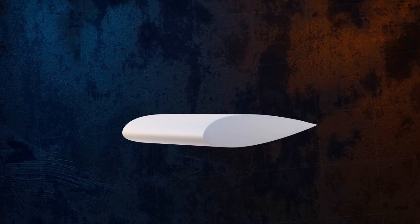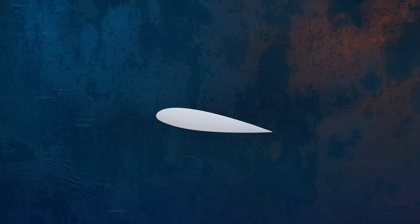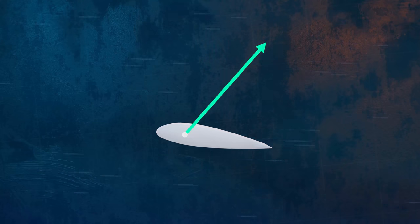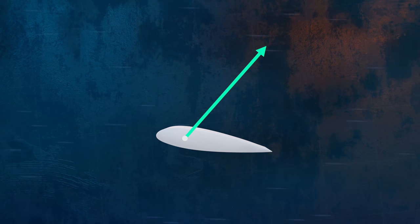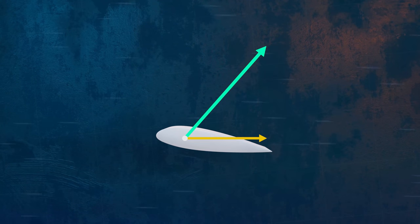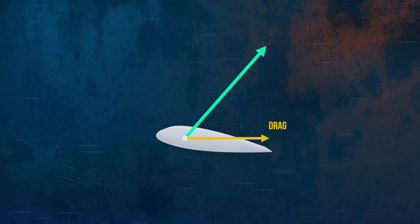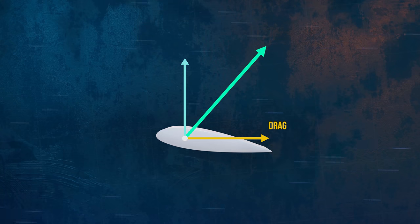When fluid flows past an object, or an object moves through a stationary fluid, the fluid exerts a force on the object. We can split the force into two components: one acting in the same direction as the fluid flow, which is called drag, and one acting perpendicular to the flow direction, which is called lift.